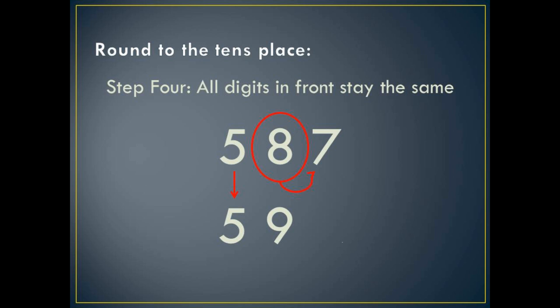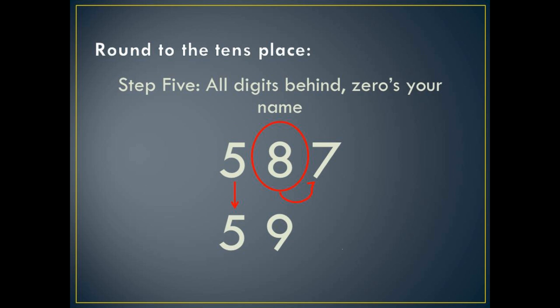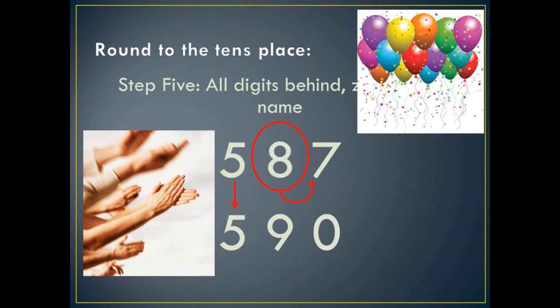We're almost through. Just one more line. All digits behind, zeros your name. Turn every digit behind the circle into a zero. That's it. You're through. It's so easy when you know the poem. That's all for today. Happy rounding.